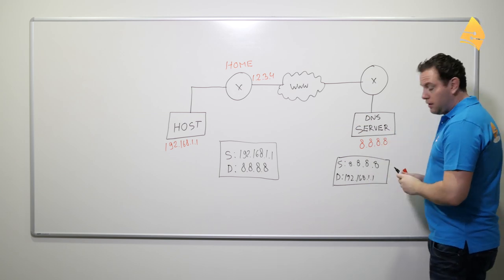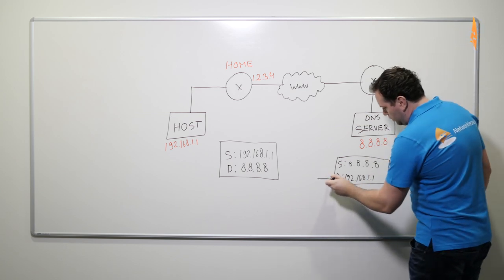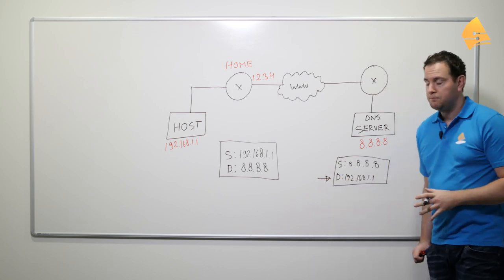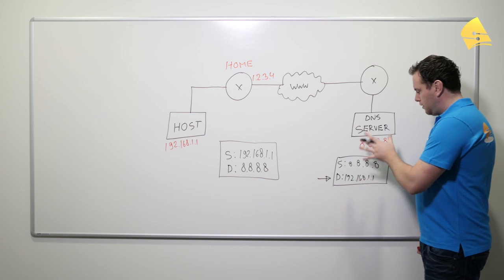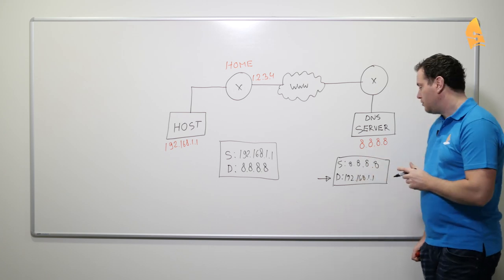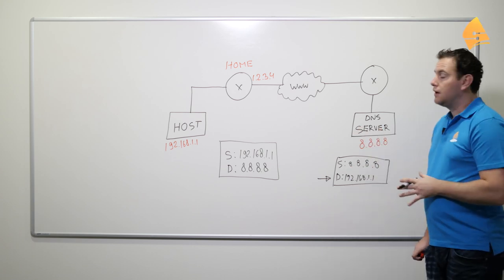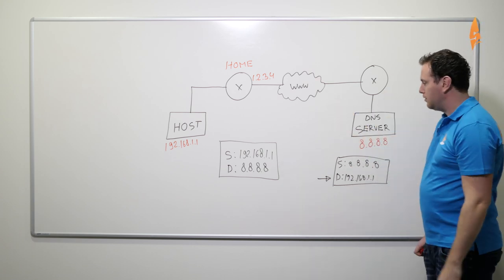And then the ISP will say, okay, that's all very nice, but this destination is a private IP address and we do not route any private IP addresses. So this packet will be dropped. It will never make it onto the internet.